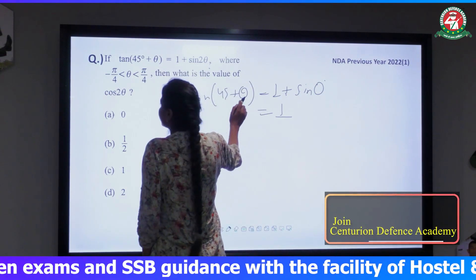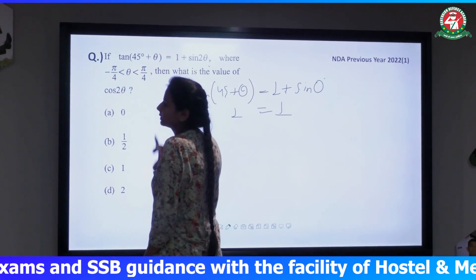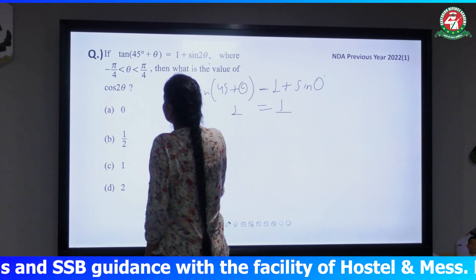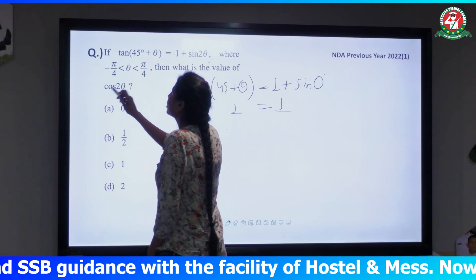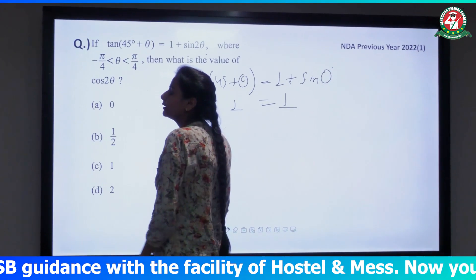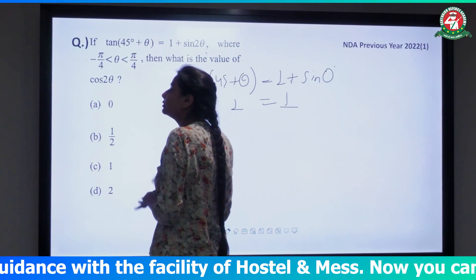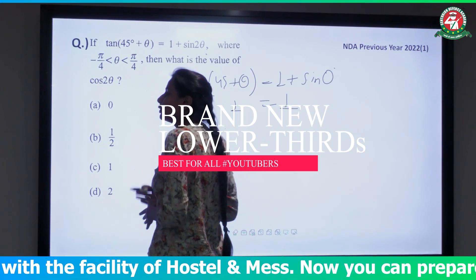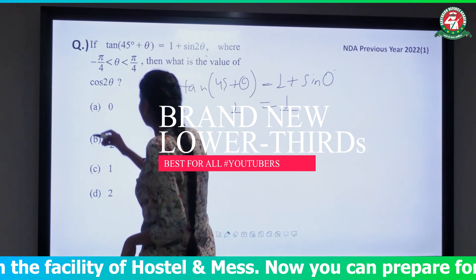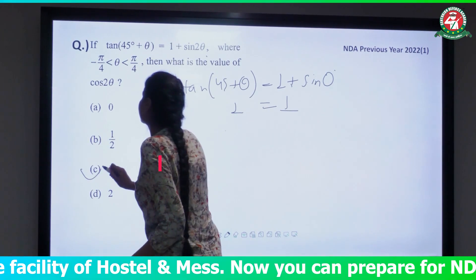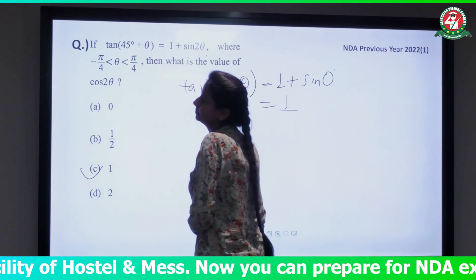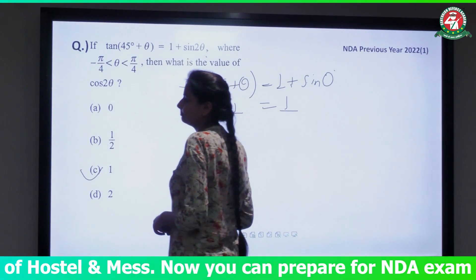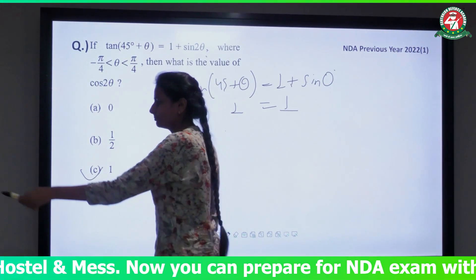Now if we put θ = 0 and take cos2θ, we will get cos(0). The value of cos 0 is 1. So our direct answer will be 1. You can make this answer directly.